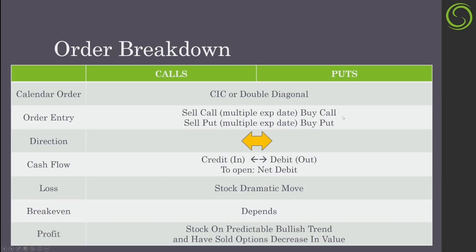Some things to expect from the double diagonal or KEC strategy: upon entry, we're selling a call and a put, we'll have multiple expiration dates in between, and then we'll be buying a longer-term call or put. We typically want the stock to be going sideways, or ideally slightly and steadily trending in the upward direction.